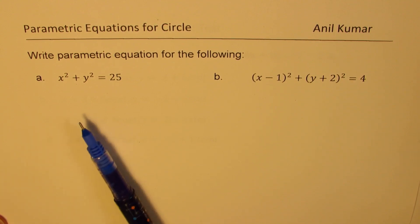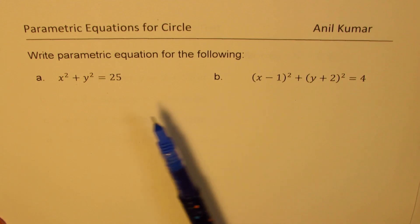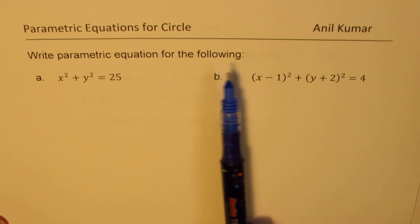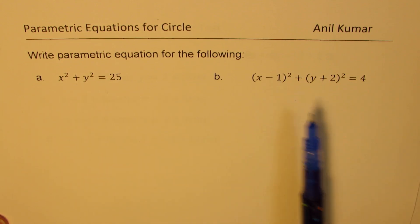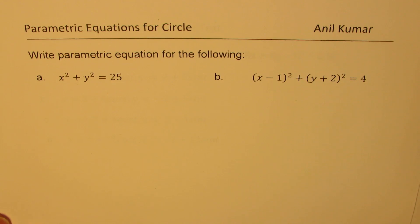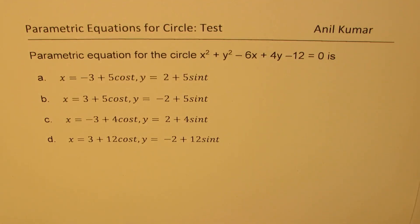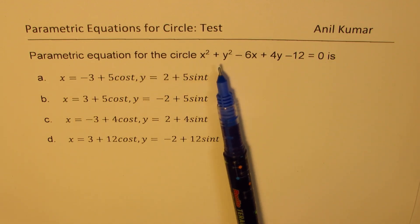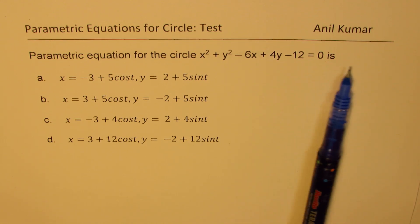I will actually solve three questions. Two of them are right here. At the end of the video, you will know how to solve questions like: write parametric equation for x squared plus y squared equals 25, x minus 1 whole square plus y plus 2 whole square equals 4, and a multiple choice question for x squared plus y squared minus 6x plus 4y minus 12 equals 0.